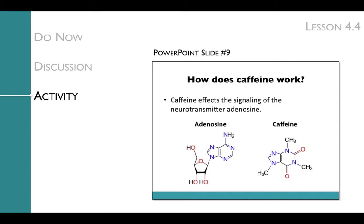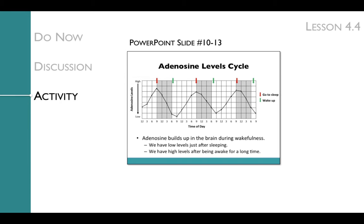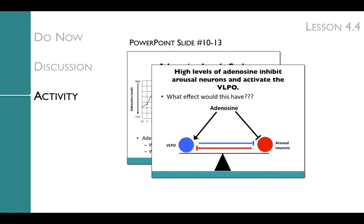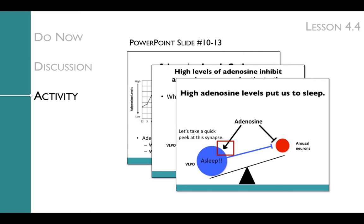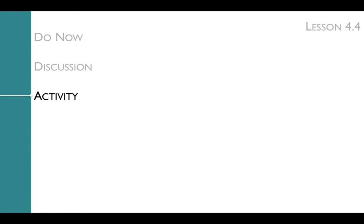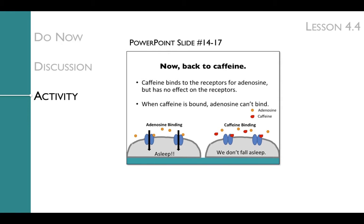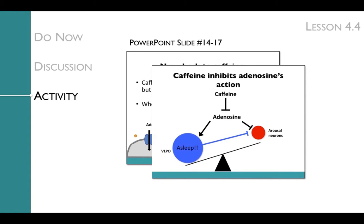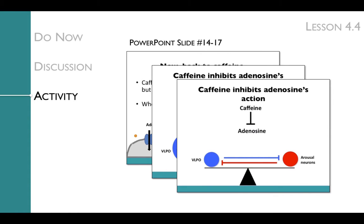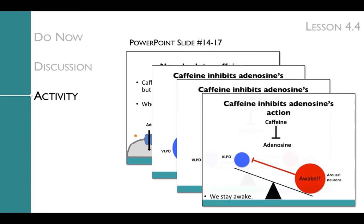Caffeine affects the signaling of the neurotransmitter adenosine. Using slides 10 through 13, you'll discuss how adenosine signals: first, that adenosine levels cycle throughout the day, with levels being highest right before we fall asleep and lowest right after we wake up. Then, that high levels of adenosine inhibit arousal neurons and activate the VLPO, which means that high adenosine levels put us to sleep. Slides 14 through 17 refocus the discussion on caffeine: caffeine binds to the receptors for adenosine but has no effect on the receptors, meaning caffeine inhibits adenosine's action. If caffeine prevents adenosine from activating the VLPO and inhibiting the arousal neurons, the overall effect is that we stay awake.